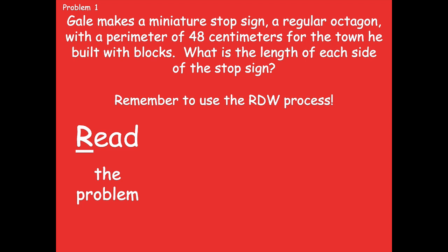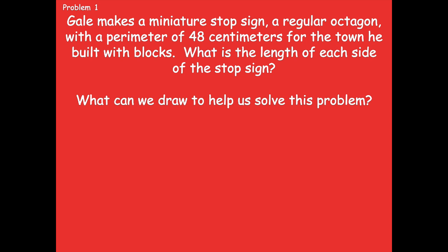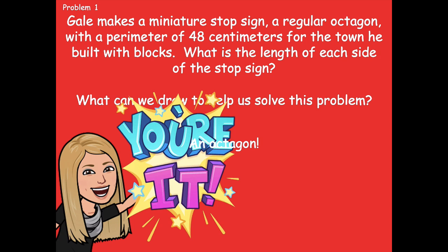We're going to use the RDW process to help us. We want to read the problem, draw and label, and write number sentences and a statement. Those things are going to help us unpack these word problems and figure out what are they asking me to do, what picture can I draw to help me, and what equation am I going to use to solve it. So what can we draw to help us solve this problem? We can draw an octagon, because it's telling us a regular octagon. An octagon has eight sides — like an octopus — that's what helps me remember. So I want you guys to pause the video, draw an octagon on your paper for number one, and then click play when you're ready for the next step.